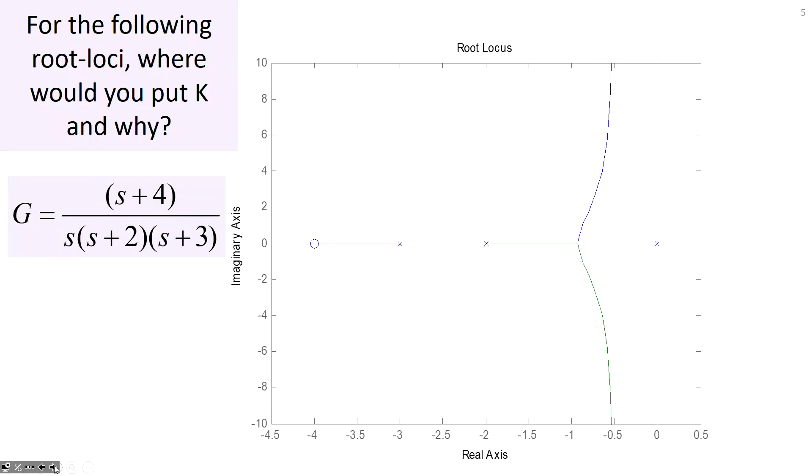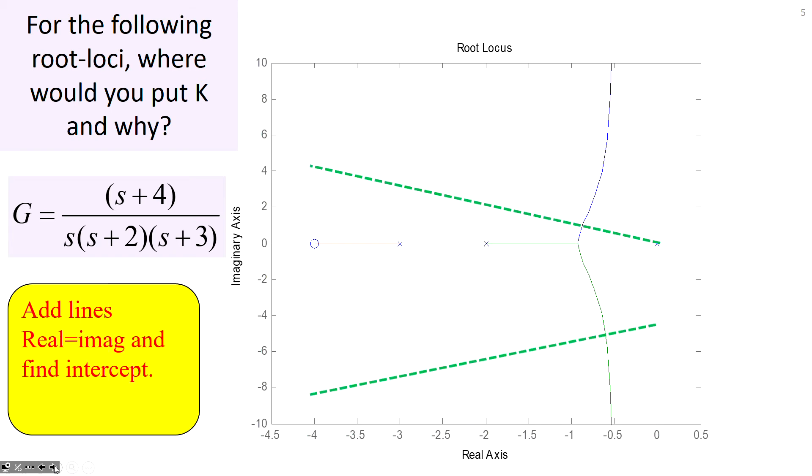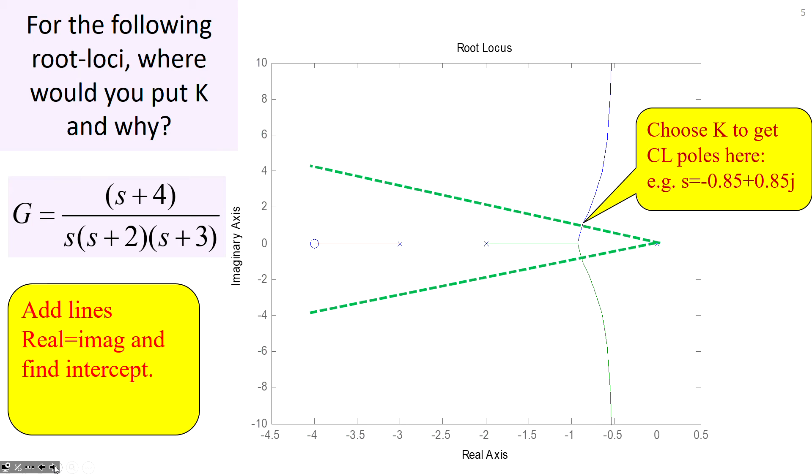So question then for the following root loci, where would you put K and why? And obviously, we're going to use the assumption that a damping ratio of about 0.7 is a good one. So the first thing to do then is add the lines, the real part equals the imaginary part. And clearly, what you can see, therefore, is the part of the root loci which overlaps with those lines is here. And that gives you a pole. Now, it says equals, but really, that should say approximate equals because I've just estimated it by looking at the picture. So you can see roughly what closed loop pole is feasible with the desired damping ratio.